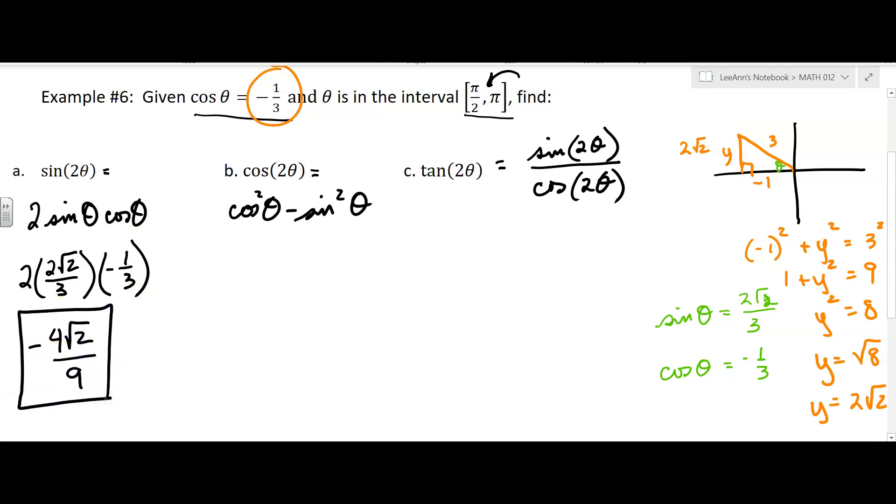And I'm going to go here. I'm going to take cosine and square it minus sine and square it. So I'm going to get 1/9 minus - it's going to be 4 times 2, which is 8, over 9 - or -7/9.